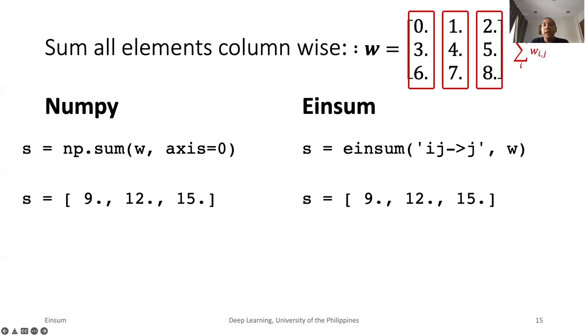Lastly, let us sum across the first axis or dimension. For NumPy, we indicate the axis of summation. For EinSum, we simply remove I after the arrow. EinSum computes the sum along this index that disappeared.